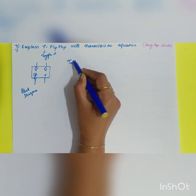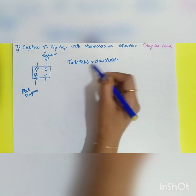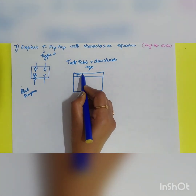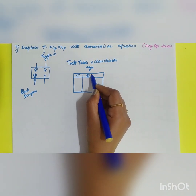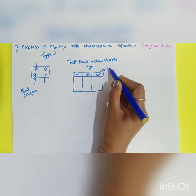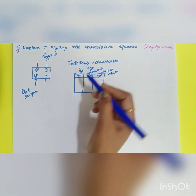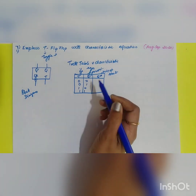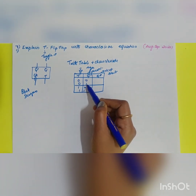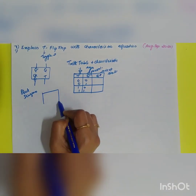Now let's look at the truth table and characteristic equation. The two input states are zero and one. Taking input T, the characteristic table includes the present state Q and the next state Q+. The combinations are: T=0, Q=0; T=0, Q=1; T=1, Q=0; T=1, Q=1.